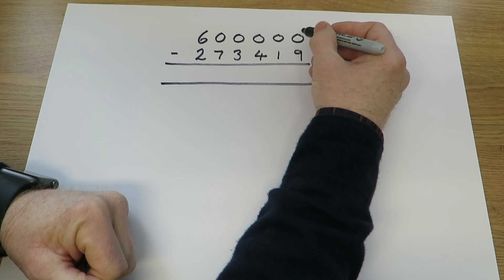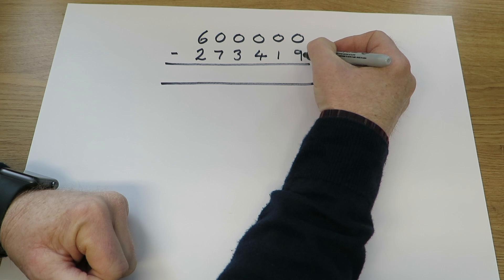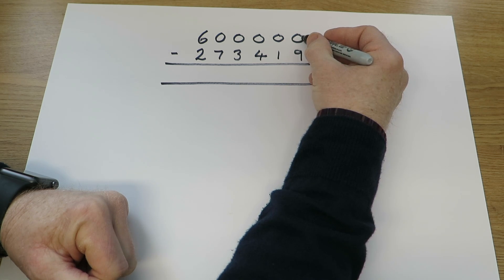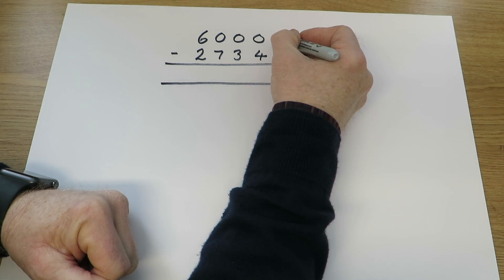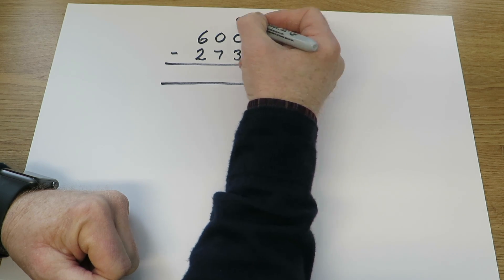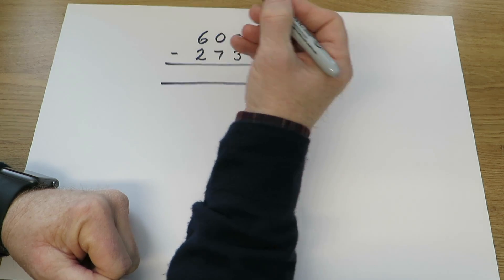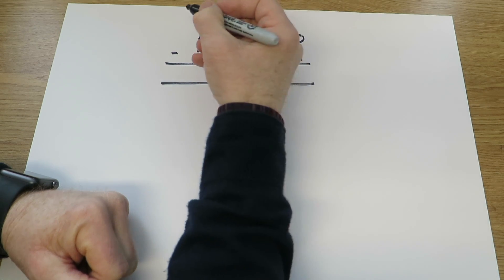We always start at the right-hand side, so 0 units take away 9 units. We haven't got enough units, because there aren't any, but there aren't any tens. There aren't any hundreds, or thousands, or 10 thousands. We've got to go all the way to the 600,000.